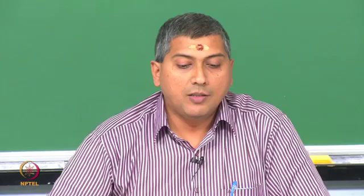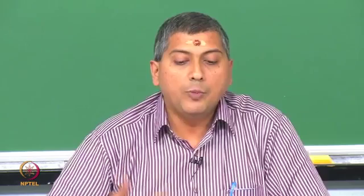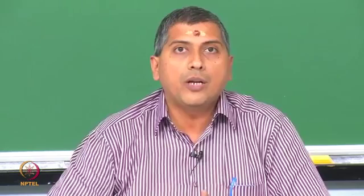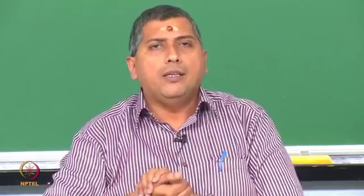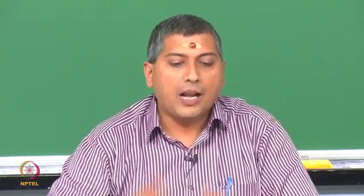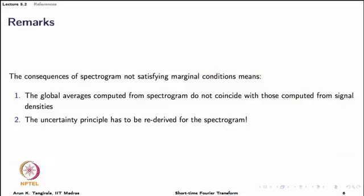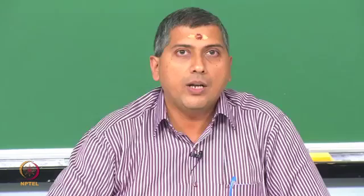The most important consequence is that the uncertainty principle must be re-derived for the spectrogram. Not only do the global averages not coincide, but also the spreads — the duration and bandwidth — computed from the spectrogram will not match those of the signal. If you want to compute the duration of the signal from the spectrogram rather than from the signal itself, they will not match. Likewise, the bandwidth computed from the spectrogram rather than from the signal will also not coincide.